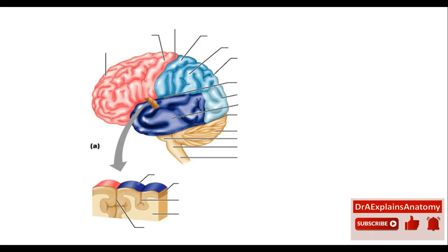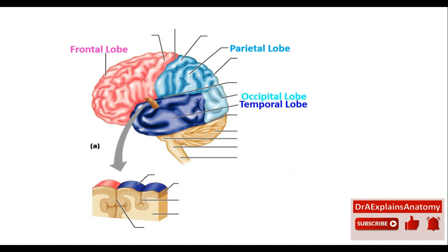First, the cerebral cortex consists of lobes. This right here is the frontal lobe. This is the parietal lobe. And this right here is the occipital lobe. And this is the temporal lobe.